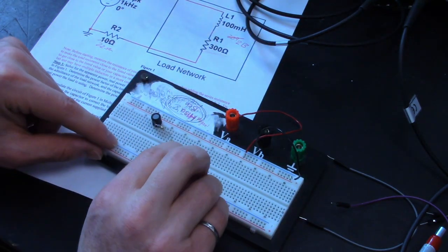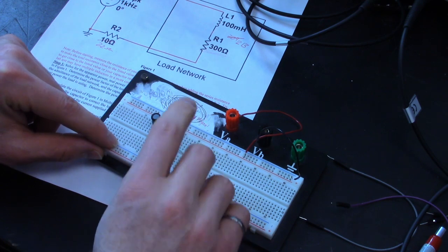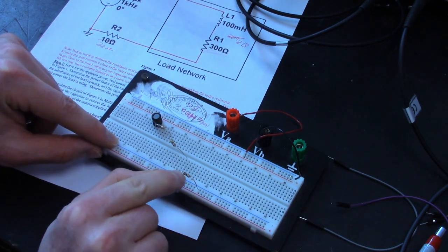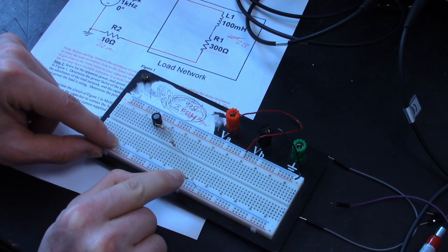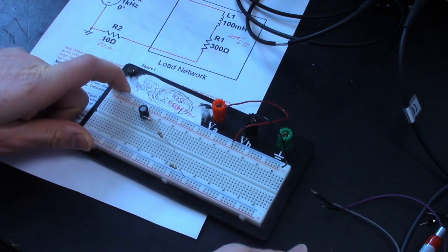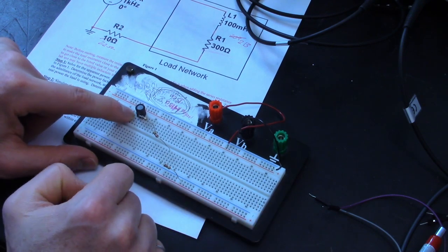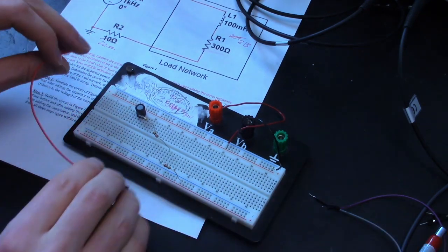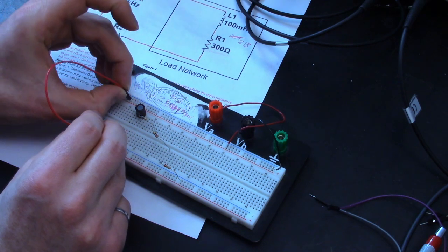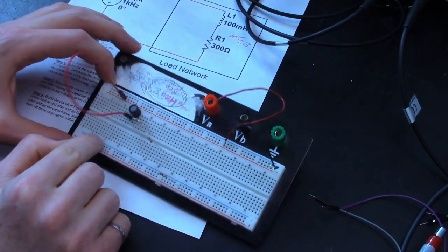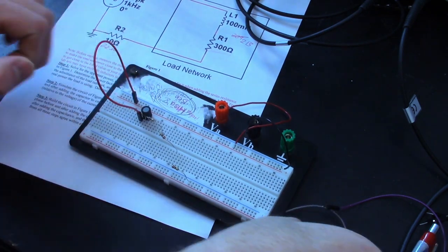So this node on the breadboard here is going to be the bottom part. Here we'll go from there over to the actual ground of the circuit via another 22 ohm resistor. Then what we're going to need to do is connect to the supply from the top part here to the top rail.